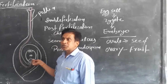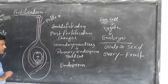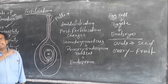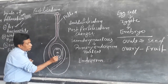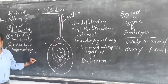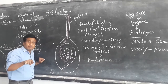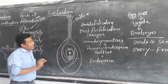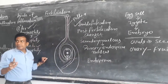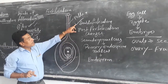Through the micropyle, the pollen tube enters into the embryo sac. The pollen tube releases two male gametes. One of the male gametes fuses with the egg cell, and the other male gamete fuses with the secondary nucleus. This means fusion takes place at two places. That is why this type of fertilization is known as double fertilization.